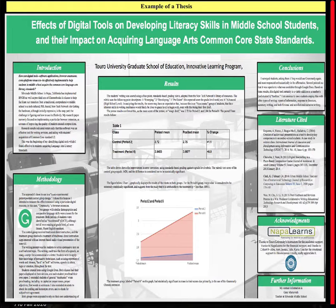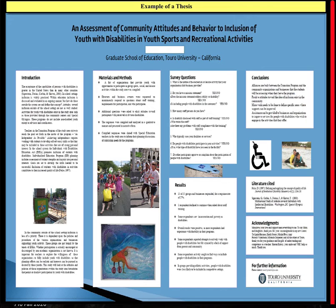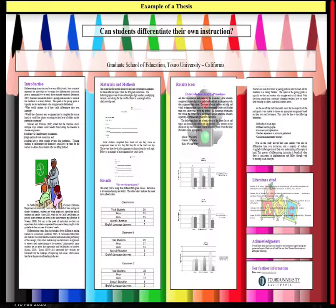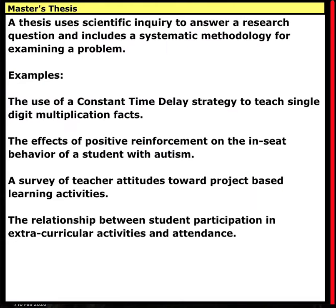Another example: 'The effects of digital tools on developing literacy skills in middle school students and their impact on acquiring language arts Common Core standards.' Again, a scientific study — notice the parts: introduction, methodology, results, conclusions. Another: 'An assessment of community attitudes and behavior to inclusion of youth with disabilities in youth sports and recreational activities' — a piece of survey research with introduction, materials and methods, survey questions, results, and conclusions. And a final example: 'Can students differentiate their own instruction?' — another very simple study done in a classroom. Those are four examples of what a thesis looks like.